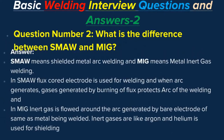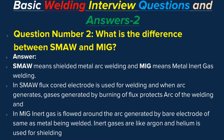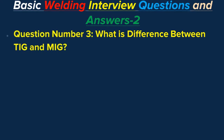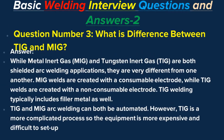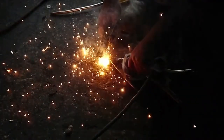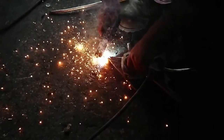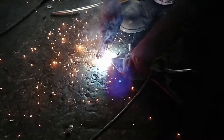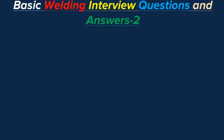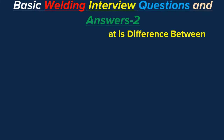Inert gases such as argon and helium are used for shielding in MIG. Question number three: What is the difference between TIG and MIG? Answer: While MIG (metal inert gas) and TIG (tungsten inert gas) are both shielded arc welding applications, they differ significantly. MIG welds are created with a consumable electrode, while TIG welds are created with a non-consumable electrode. TIG welding typically includes filler metal as well.